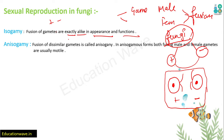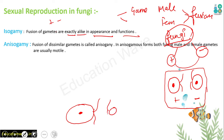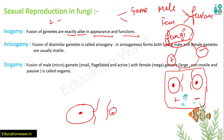Now, what is anisogamy? Obviously, if 'iso' means same, then 'aniso' means different. Fusion of dissimilar gametes is called anisogamy. In isogamy both fusing gametes - male and female - are usually both motile, but in anisogamy they are different. For example, one is larger in size. So this is called anisogamy - dissimilar gametes that do not look the same.